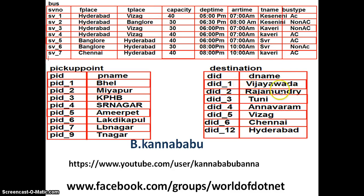I will explain why I removed the fare. These are the three original tables related to our project. Now we need to find the relationship between the first table and the second table, the first table and the third table, and the second table and the third table.